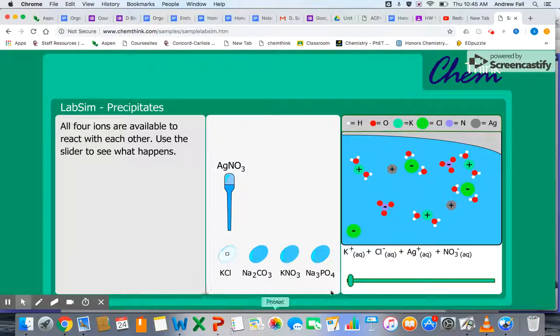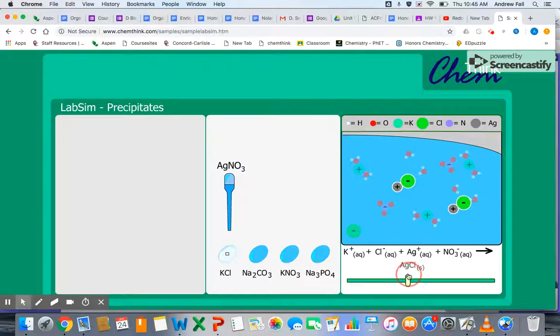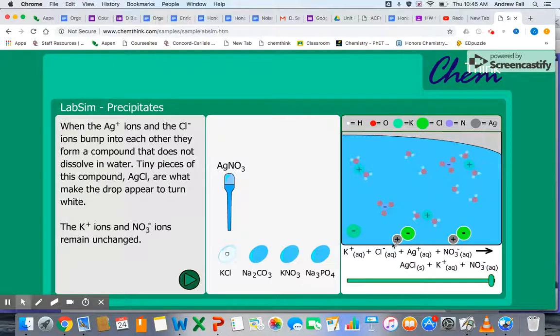So once the reaction occurs, some of the ions will combine to form a solid compound. So in this case, silver, which isn't super soluble, can actually form a precipitate with the chloride ion. So the silver and the chloride form the precipitate and the potassium and the nitrate ions kind of just stay floating around in solution. They don't really participate in the reaction. We call them spectator ions.